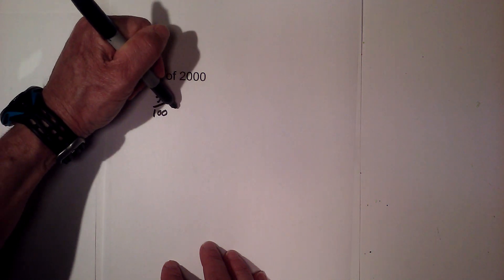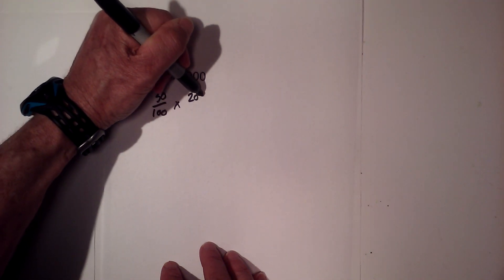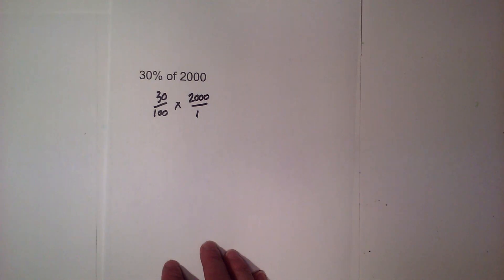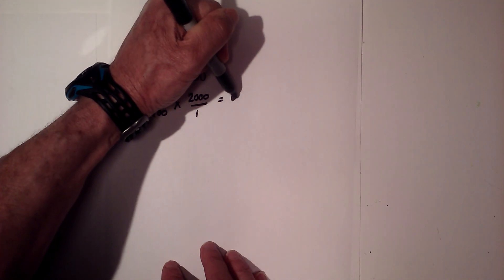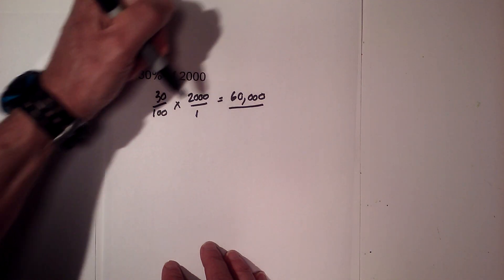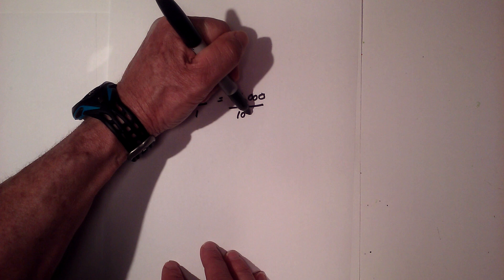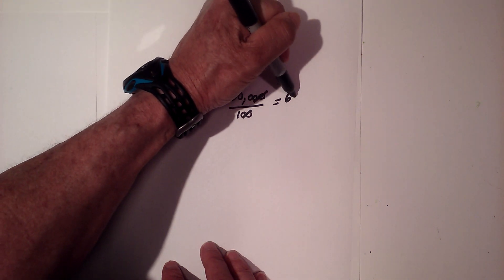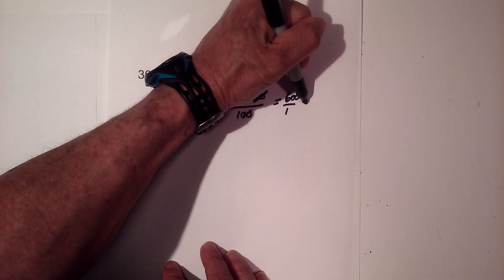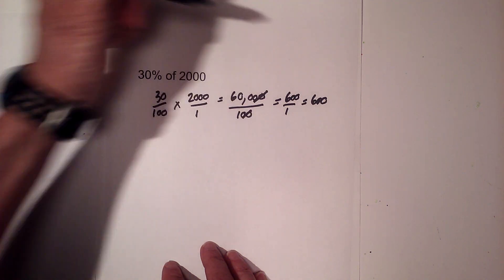Let's work one more problem. Convert to a fraction: 30% becomes 30 over 100, and rewrite 2,000 as 2,000 over 1. Multiply straight across: 30 times 2,000 equals 60,000 over 100. Cancel two zeros to get 600 over 1, which equals 600.